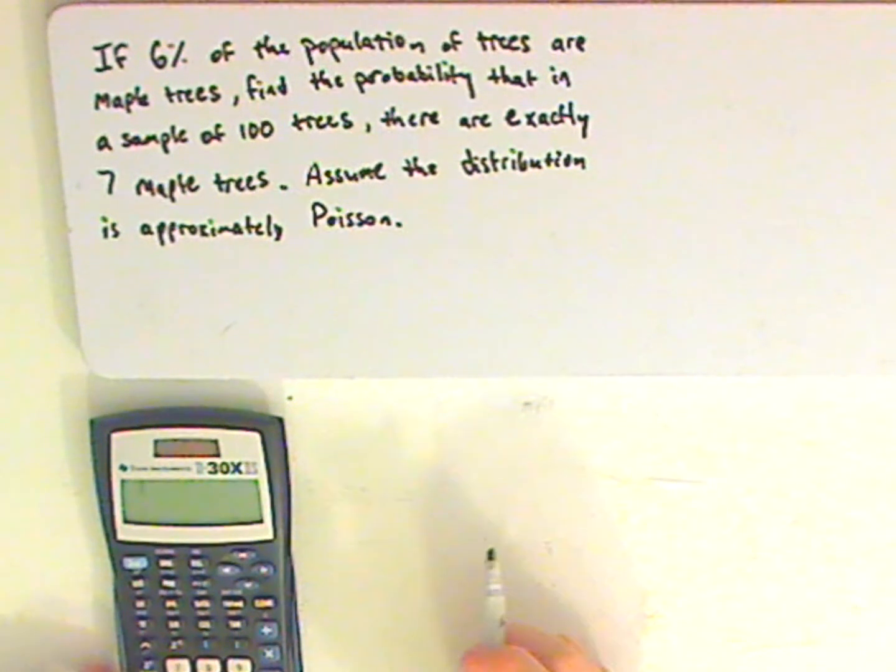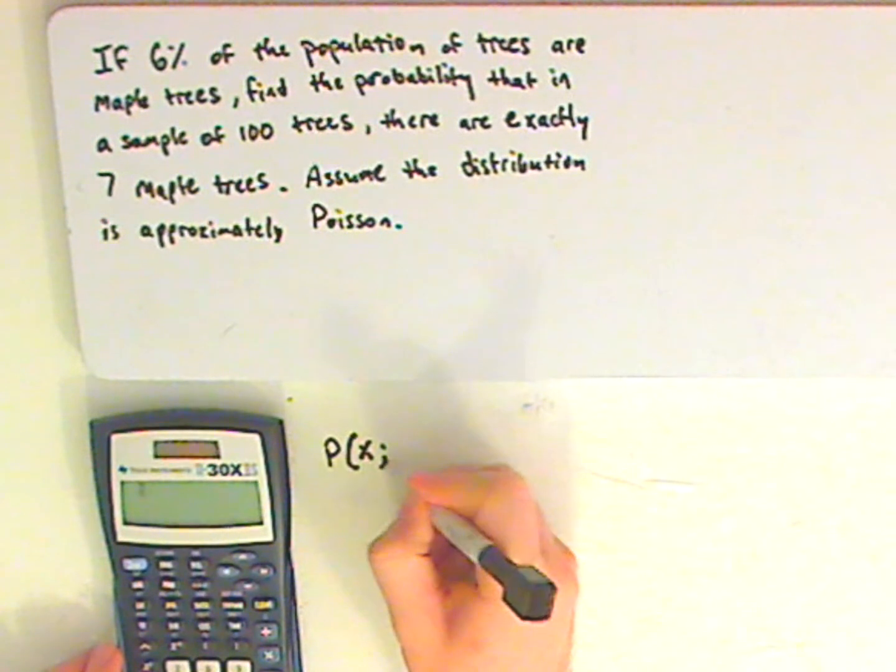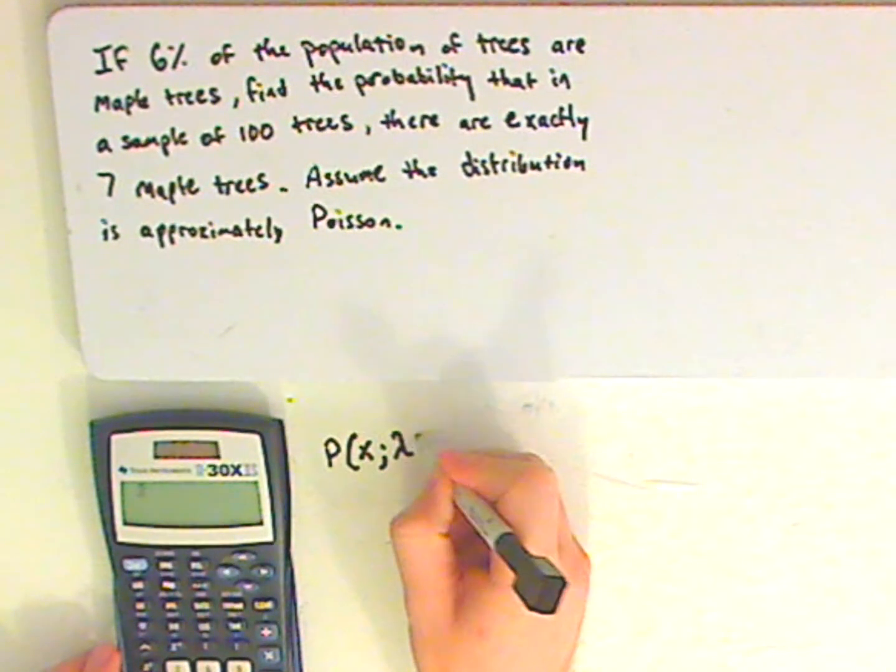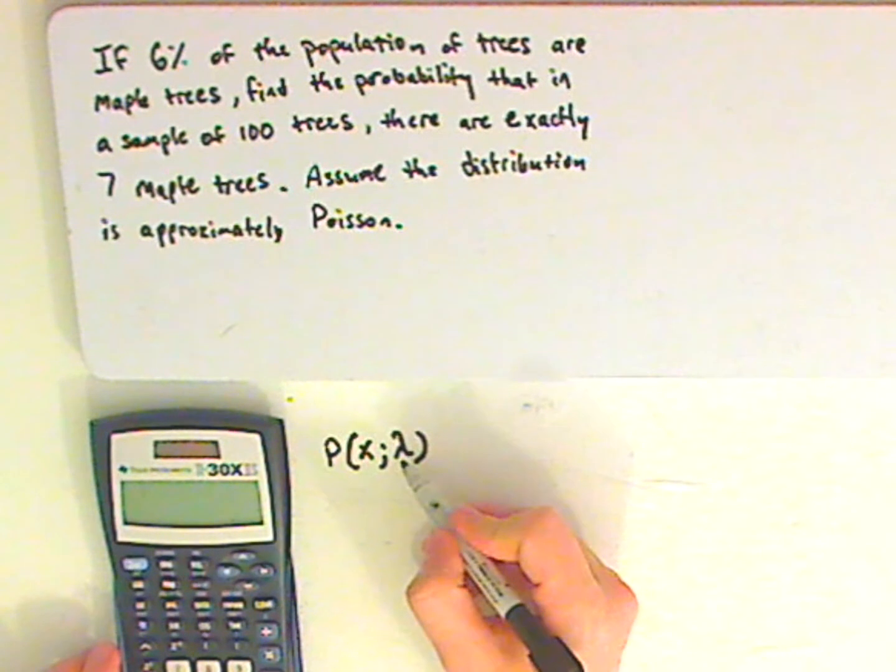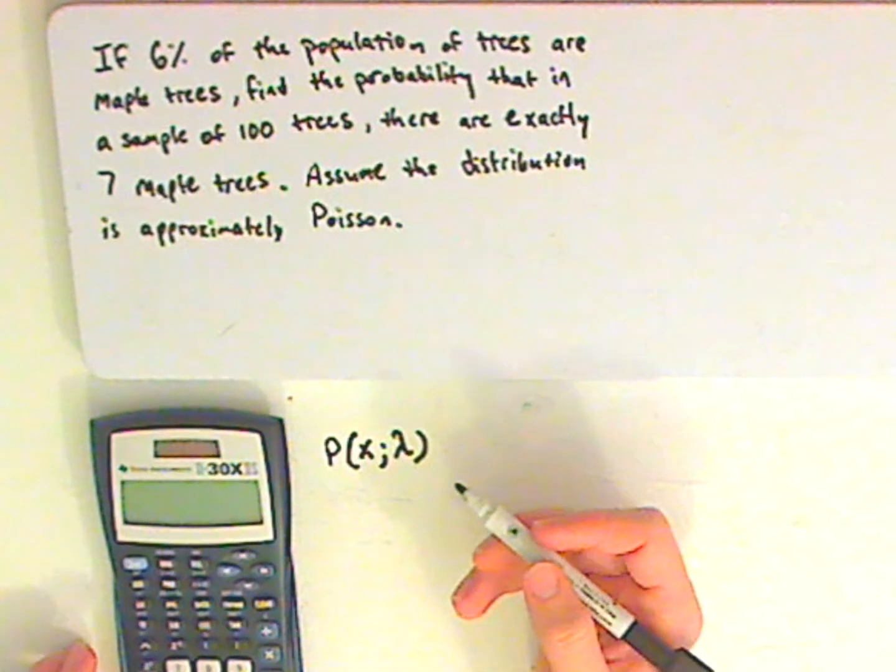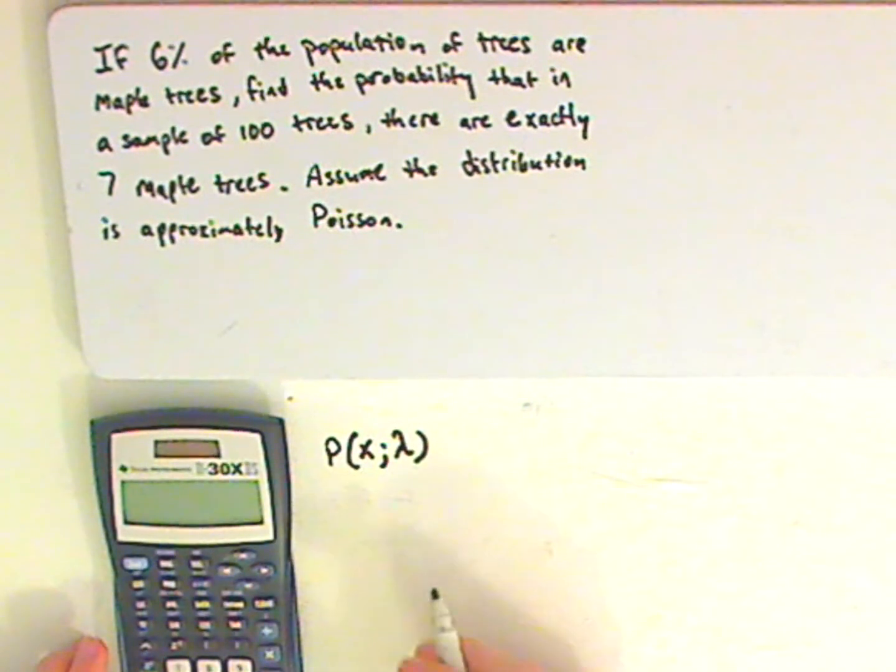Alright, the formula to use is the probability of X semicolon lambda, and lambda is the expected number of occurrences where X is whatever probability you're looking for.